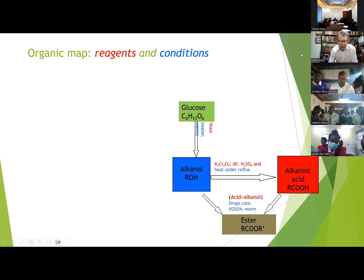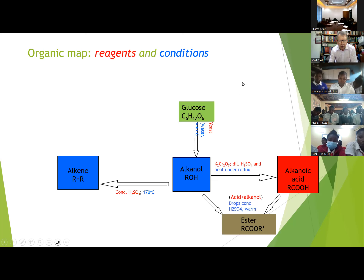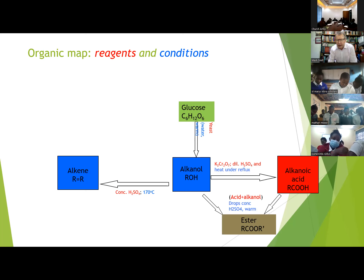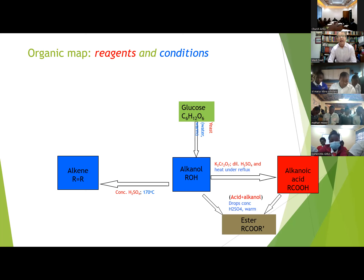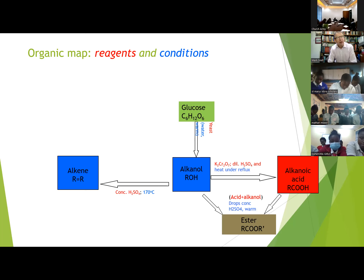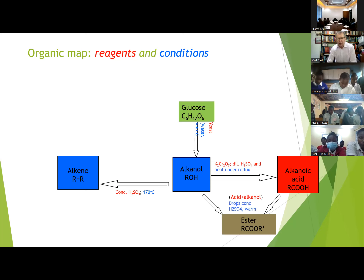To turn an alkanol into an alkene, you remove water — this is dehydration. The best method is concentrated sulfuric acid heated to about 170°C. There are other ways, such as heating with broken pottery, but the answer required in the examination is concentrated sulfuric acid at 170°C.